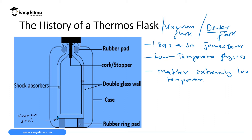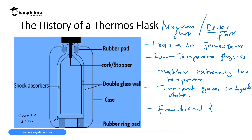Sir James Dewar made it possible for us to transport gases in liquid state. The gases we use at home for cooking, or even the gases used in hospital such as oxygen, are transported in liquid state, and it was Sir James Dewar who made this possible. This man also contributed greatly in chemistry, in an industrial process called fractional distillation of liquefied air, making it possible to separate the gases of the atmosphere.